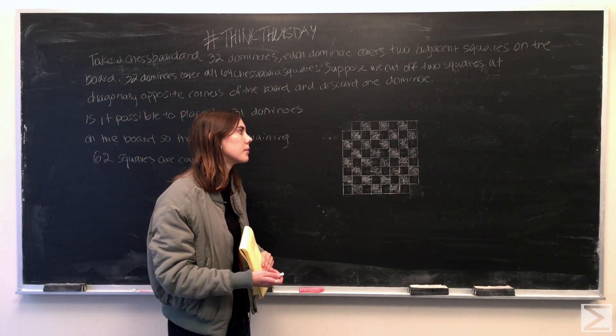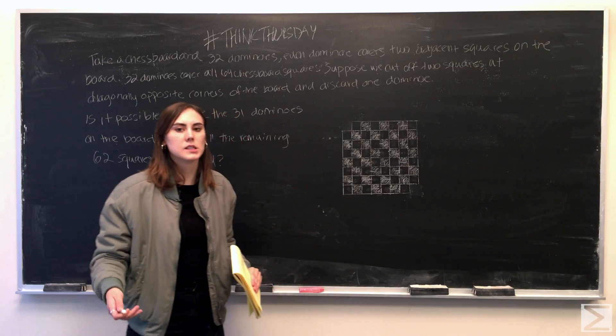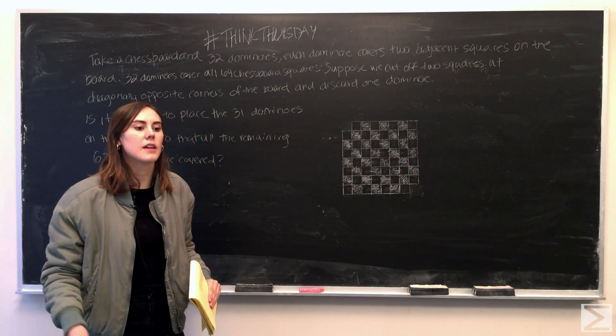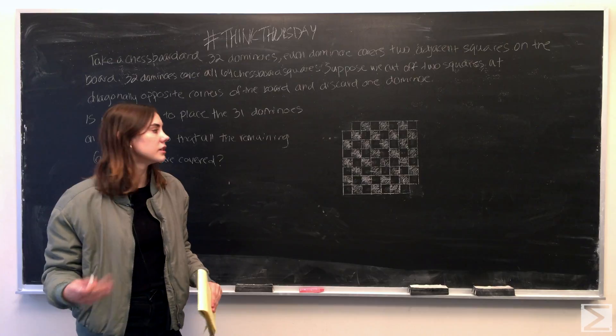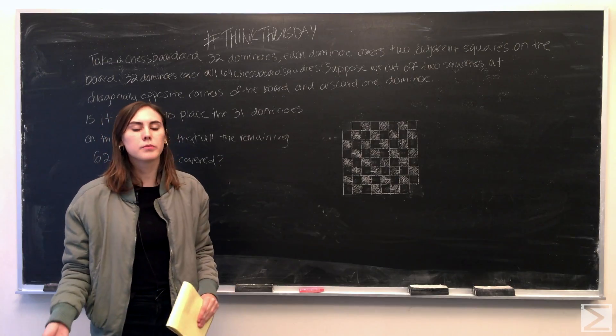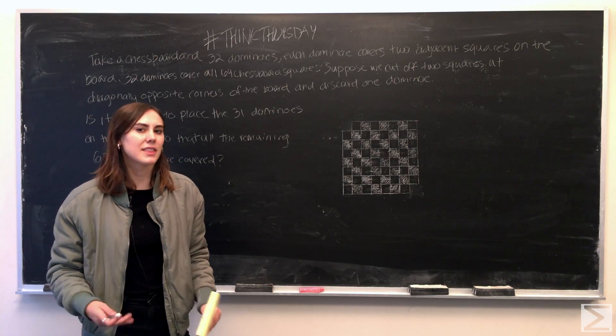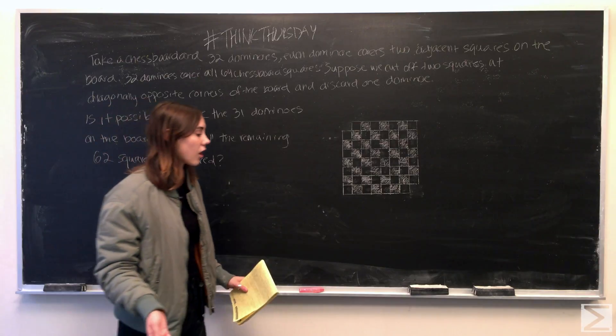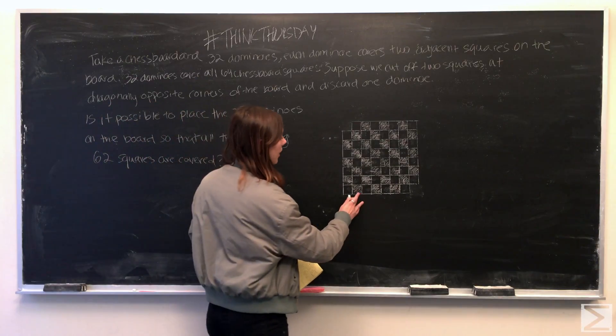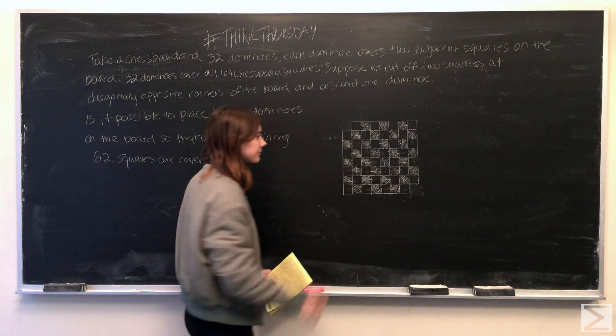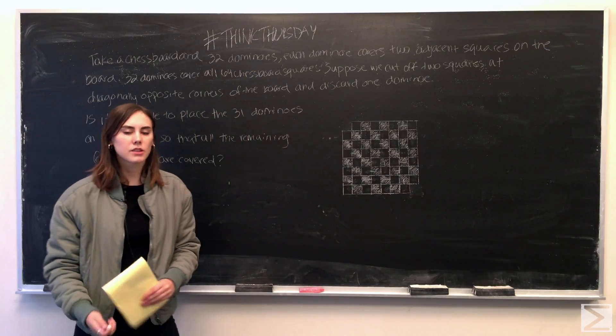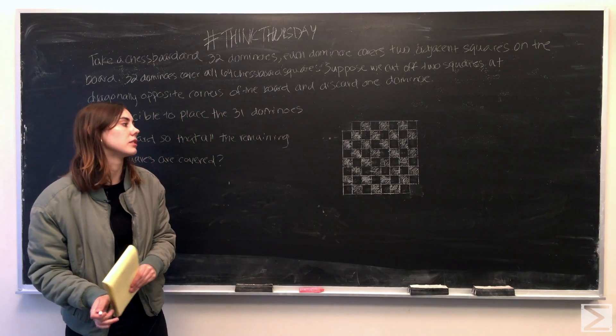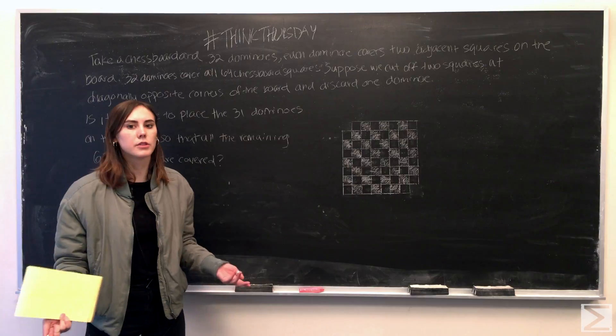...what you'll end up with is two additional squares at the end for one remaining domino to cover and they'll both be of the same color. And what that means is that they can't be adjacent at all since two adjacent squares are of opposite color. So since they're not adjacent, there's no way actually to tile that last domino to cover those two squares.